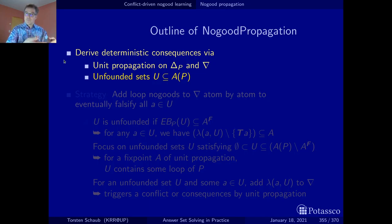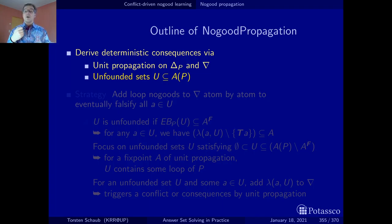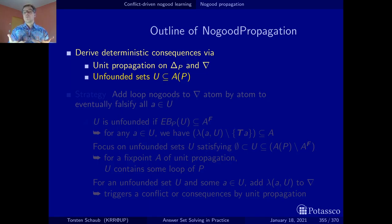In the lazy approach, you have a dedicated algorithm that spits out the corresponding no-goods when needed. They are not all put into the solver up front; they are only added to the solver when something was derived that makes a no-good relevant. This notion of eager and lazy solving is well-defined in the literature.